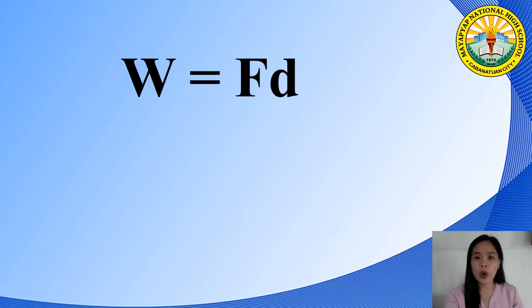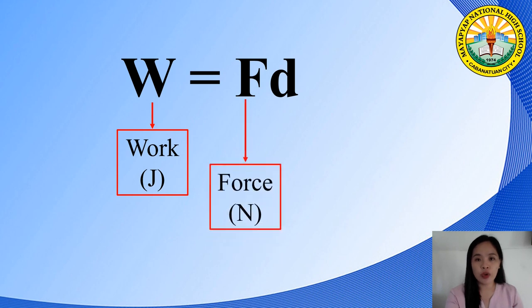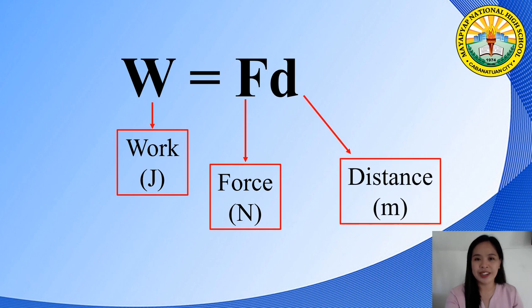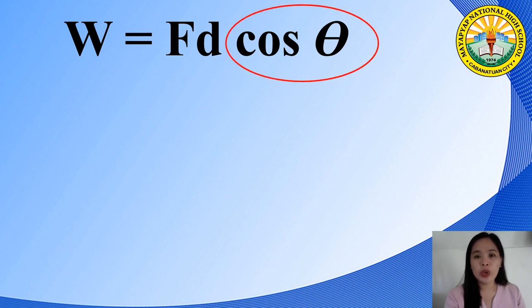To know how much work is done on a body, we use the equation W = F × D, where W stands for work (unit: Joule), F stands for force (unit: Newton), and D stands for distance (unit: meter). However, if the force applied to a body creates an angle, we use the equation W = F × D × cosine theta, and we substitute the given angle for theta.